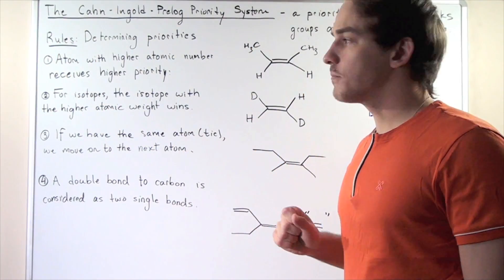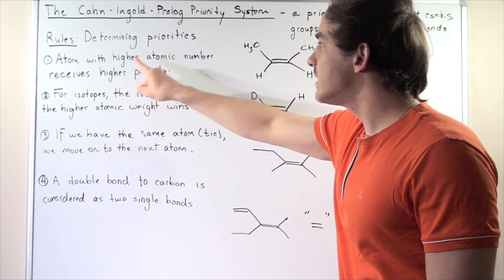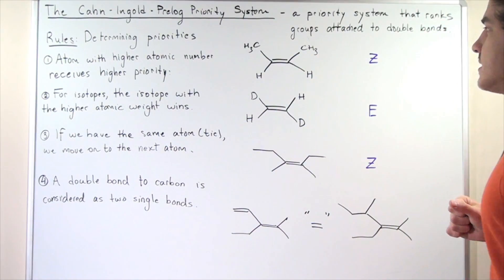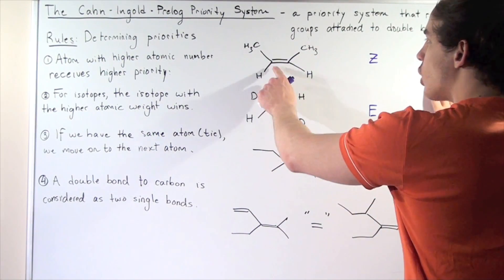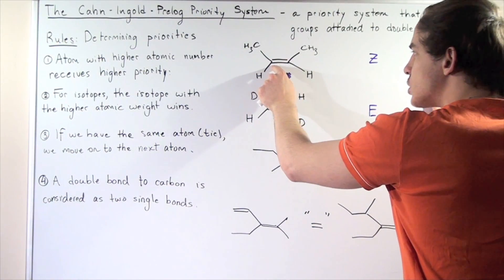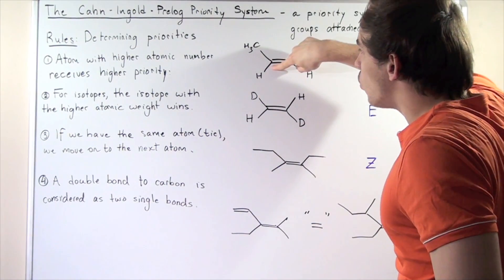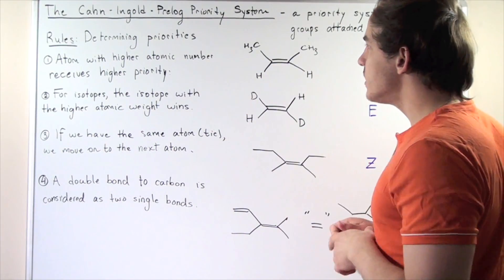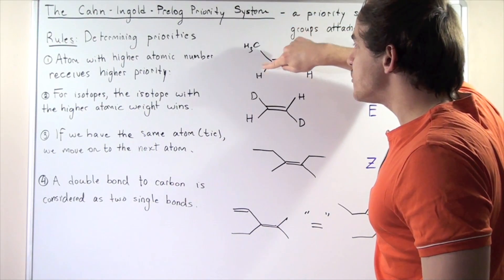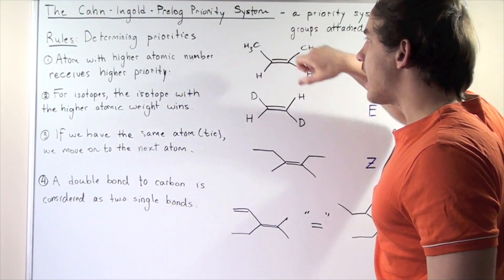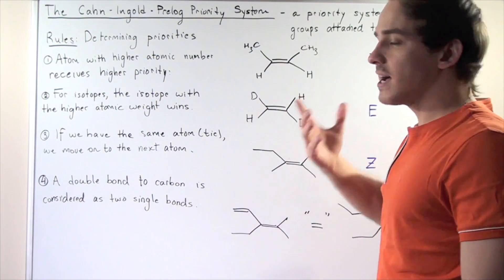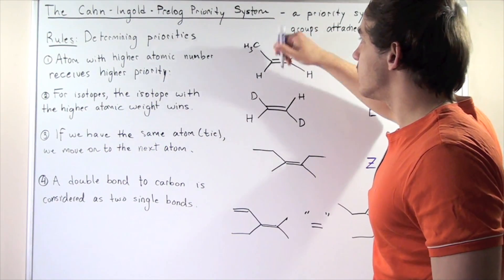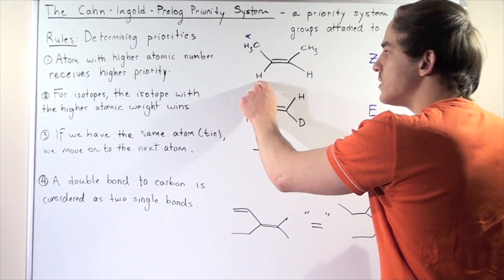Rule number one: the atom with the higher atomic number receives higher priority. Here we have a carbon-carbon double bond. Examining carbon number one, it is attached to two groups: an H or a carbon. Which atom has a higher atomic number? Clearly the carbon has a higher atomic number, and that means the group attached to that carbon has a higher priority than the H group.